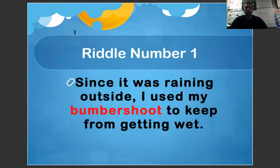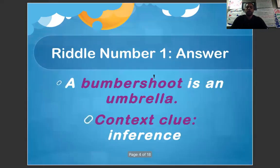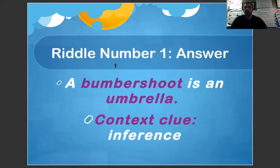Riddle number one. Since it was raining outside, I used my bumbershoot to keep from getting wet. The answer: a bumbershoot is an umbrella. The context clue is the inference. We inferred from it being raining outside that using something to keep from getting wet would be an umbrella.